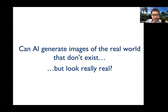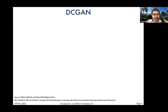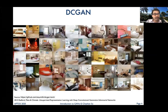Let me show you some examples. One of the first GANs to catch attention was the DC GAN, which generated bedrooms — bedrooms that did not exist. Here's a sample: all of these bedrooms look different from one another, and the GAN generated them randomly.